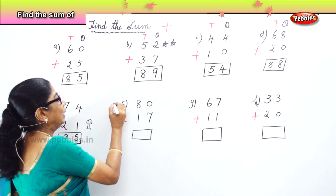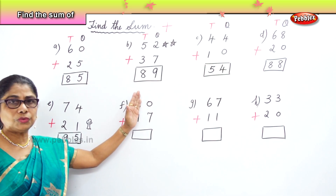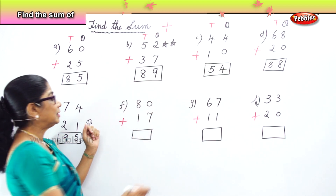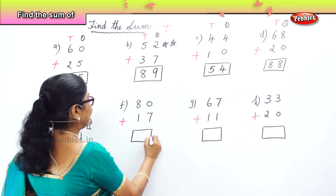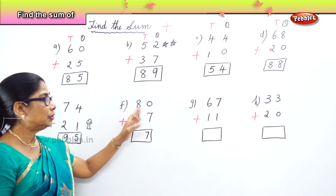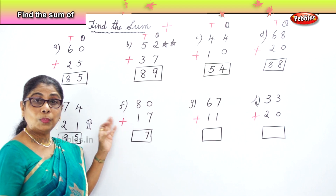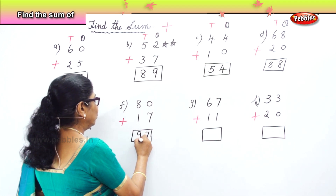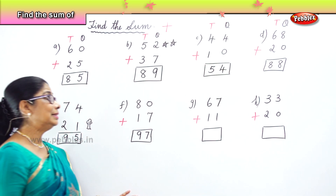Find the sum of 80 plus 17. Look at the ones place — you have 0 and 7. 7 plus 0 is 7 itself. Any number plus 0 is the number itself. Now 8 tens and 1 ten make 9 tens. The sum of 80 plus 17 is 97.